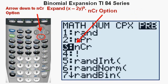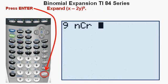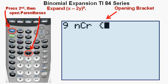Arrow to the right over the PRB for probability submenu. Scroll down to option 3, NCR. Press enter. This operation is pronounced N choose R. The 9 in front means that N equals 9. Now, create an opening bracket by pressing the second key at the upper left of the keypad, then the opening parentheses key just above the number 8.